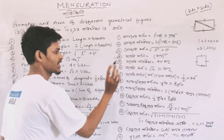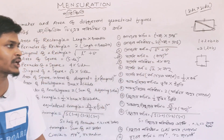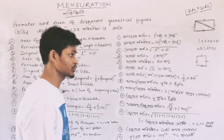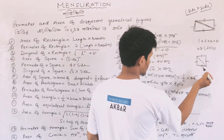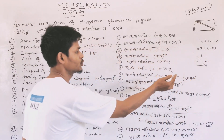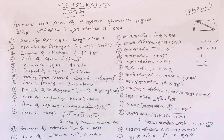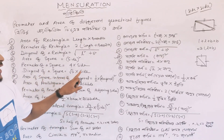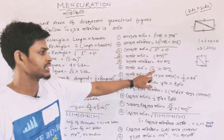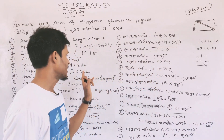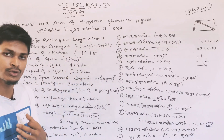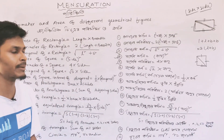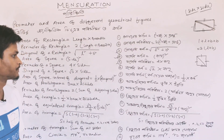Perimeter of square is 4 into side. The diagonal of a square: if the side is 2 cm, the diagonal is root 2 into 2 cm.